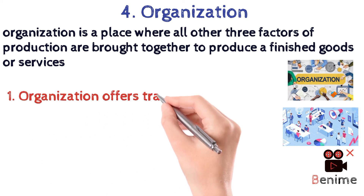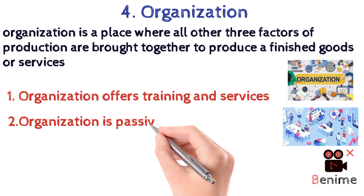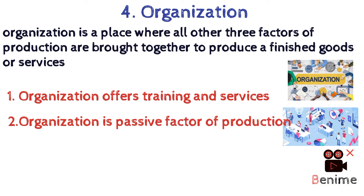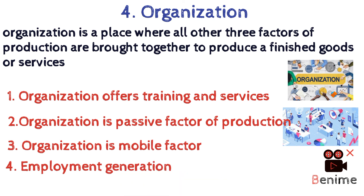Number one: organization offers training and services, meaning it is the duty of every organization to provide basic training to their employees about their work and also other health services. Number two: organization is a passive factor of production, meaning it cannot work by itself — it needs human beings or machines for its operation. Number three: organization is a mobile factor, meaning we can shift our organization from one place to another or open another branch. Number four: employment generation — since any organization needs human beings to work, it hires people and provides employment opportunities, thus reducing poverty and unemployment.